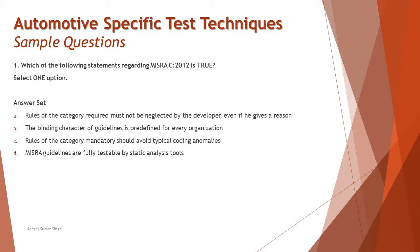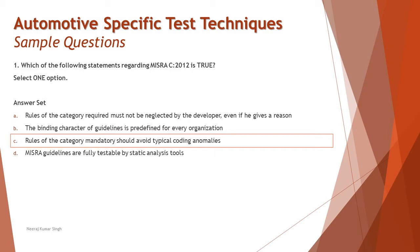Option D states that MISRA guidelines are fully testable by a static analysis tool. There is no specific tool available today that completely captures everything from code review — security vulnerabilities, coding issues, and so on. Directives are not fully testable by static analysis tools, so option D is incorrect. The right answer is C: rules of the category mandatory should avoid typical coding anomalies, which is well supported by the MISRA C 2012 guidelines used in the automotive industry.